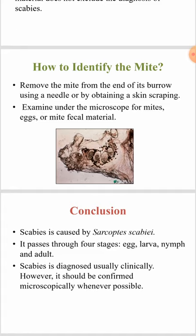In conclusion, scabies is caused by Sarcoptes scabiei. This parasite passes through four stages of development: eggs, larvae, nymphs, and adults. Scabies is diagnosed usually clinically; however, it should be confirmed microscopically whenever possible.